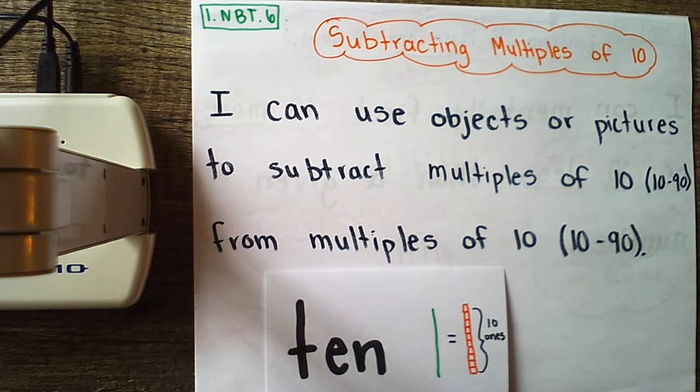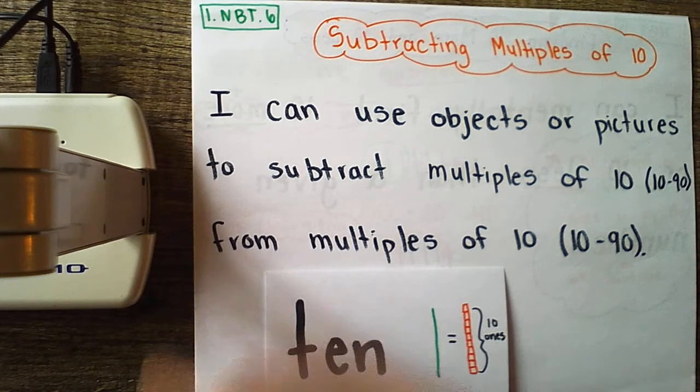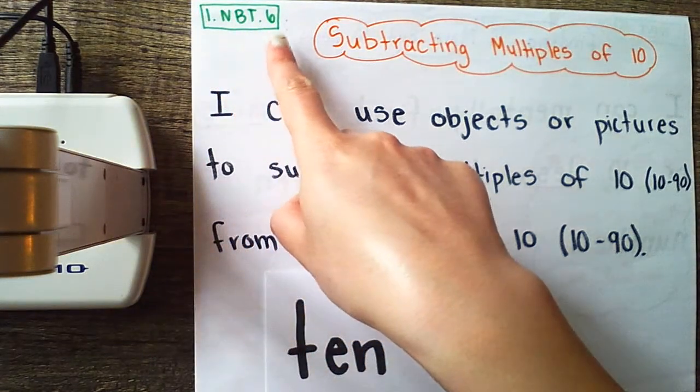We are working on math. We are in week four of teleschool and this will be day two's lesson. Yesterday we worked on mentally finding 10 more or 10 less than a given number. Today we're going to move on to another standard, 1NBT6.